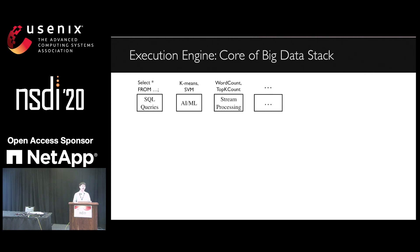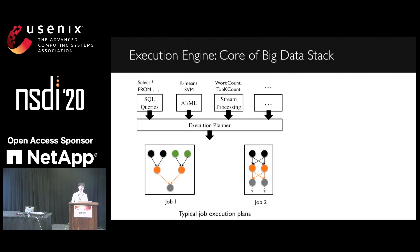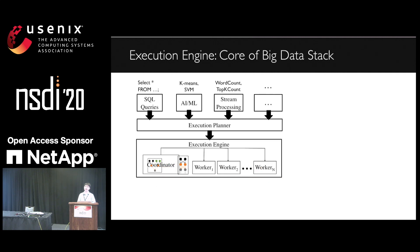The top is the application layer where users submit various jobs like SQL queries or streaming processing jobs. For each job, the execution planner will generate the execution plan. As shown here, the execution plan is often a directed graph with task dependencies. In fact, this execution plan is the input to execution engines, which consists of a central coordinator and multiple workers.